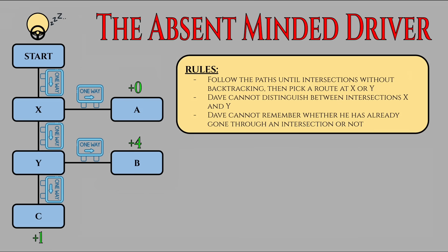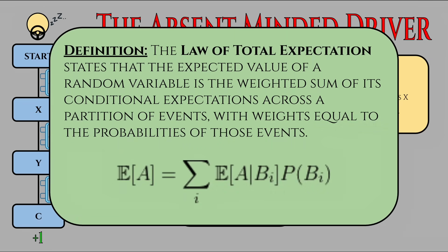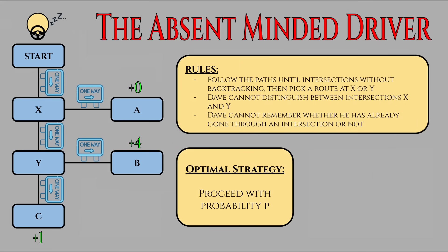Let P be the probability of proceeding through and not taking the exit. We can now use the Law of Total Expectation, which states that the expected value of a random variable A can be found by summing the expectation of A, given some sub-scenario weighted by the probability of each exclusive sub-scenario occurring. Here, we're conditioning where Dave ends up.